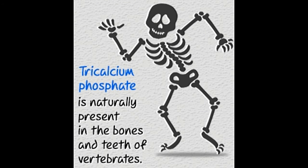Tricalcium phosphate is a chemical naturally found in milk and bones, and used in various applications. Here's more about this interesting chemical compound.